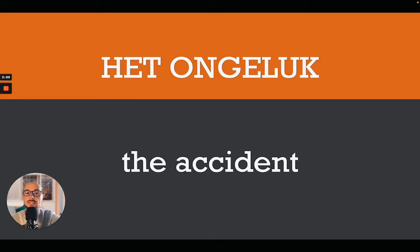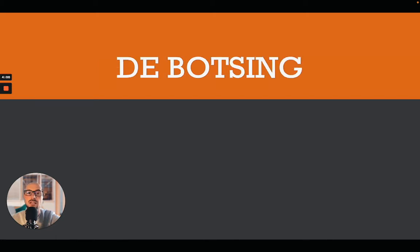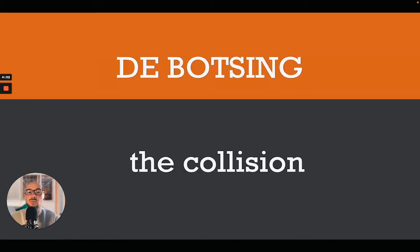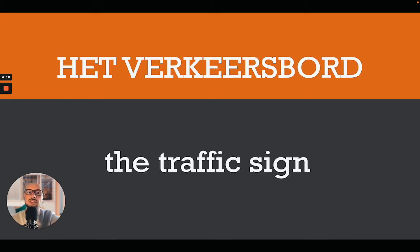Then of course we have 'het ongeluk' — 'het ongeluk' is the accident. If there's an accident in traffic, we speak about 'een verkeersongeluk,' a traffic accident. Most of the time when there's an accident there's a collision, and in Dutch we call that 'de botsing.' Do bear in mind the pronunciation — the 'ng' at the end is pronounced exactly like in English: wing, sing, thing. 'De botsing.'